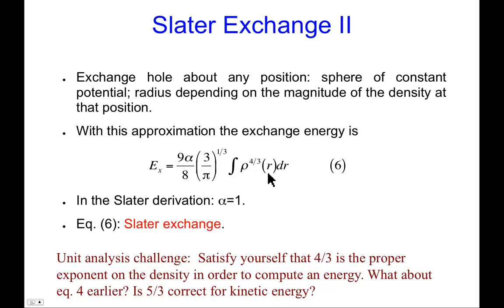But in any case, a bunch of constants and then you integrate over space ρ to the four thirds. So that defines something called Slater exchange. It's the Slater exchange energy. And I'm just going to offer a little challenge here that you might try on the back of an envelope at some point after this lecture or later today and satisfy yourself that four thirds. So that's an odd looking exponent, isn't it? Why on earth would the power of four thirds appear in something? So I would urge you to satisfy yourself that is the proper exponent in order to compute an energy. And if you remember in equation four earlier, that was the Thomas-Fermi kinetic energy that had a five thirds exponent.